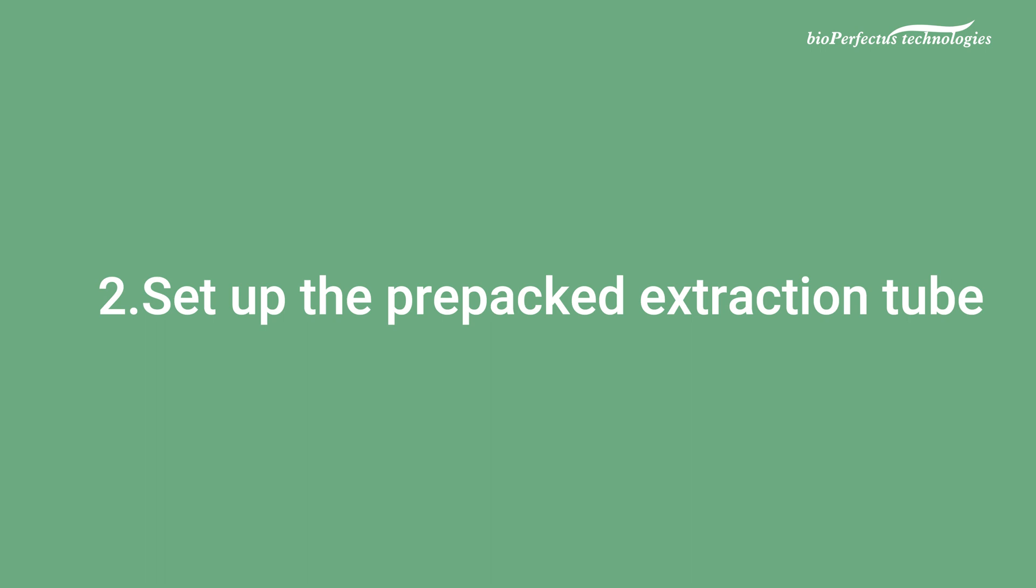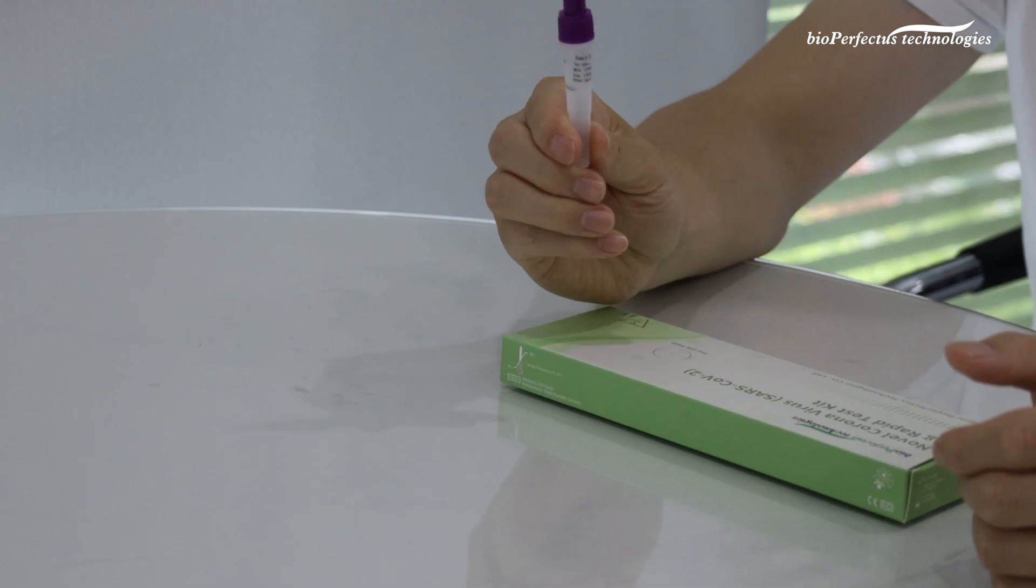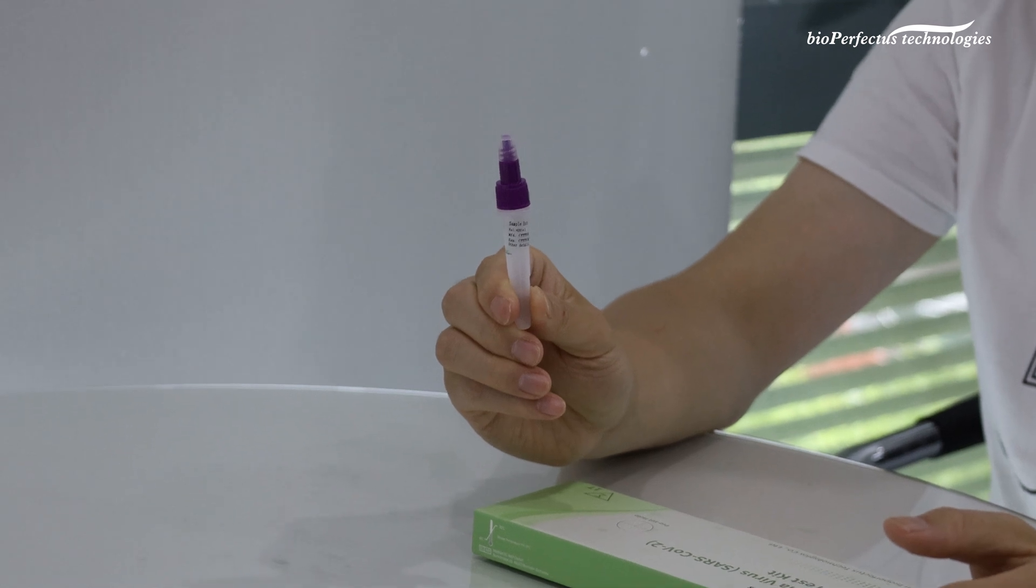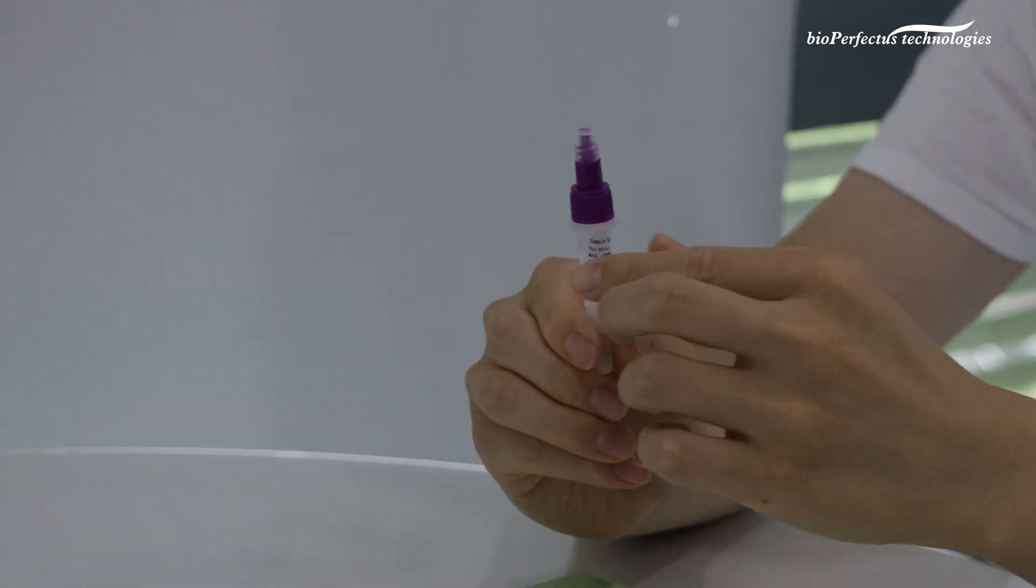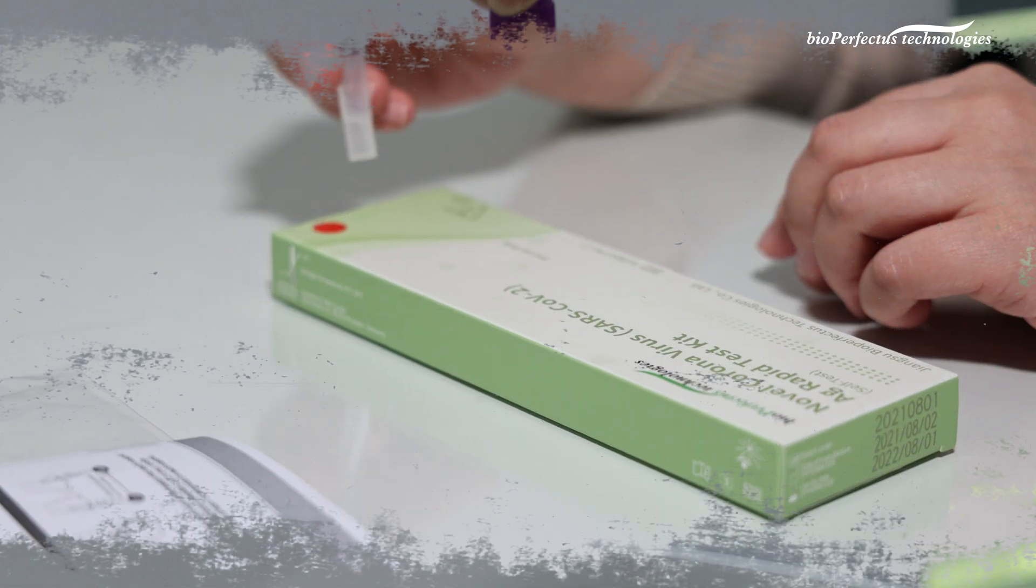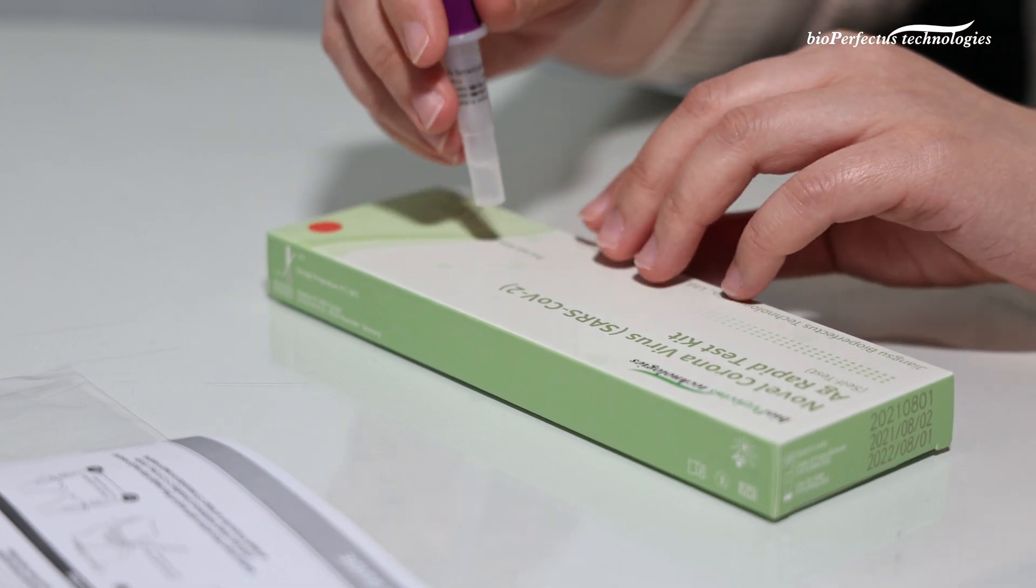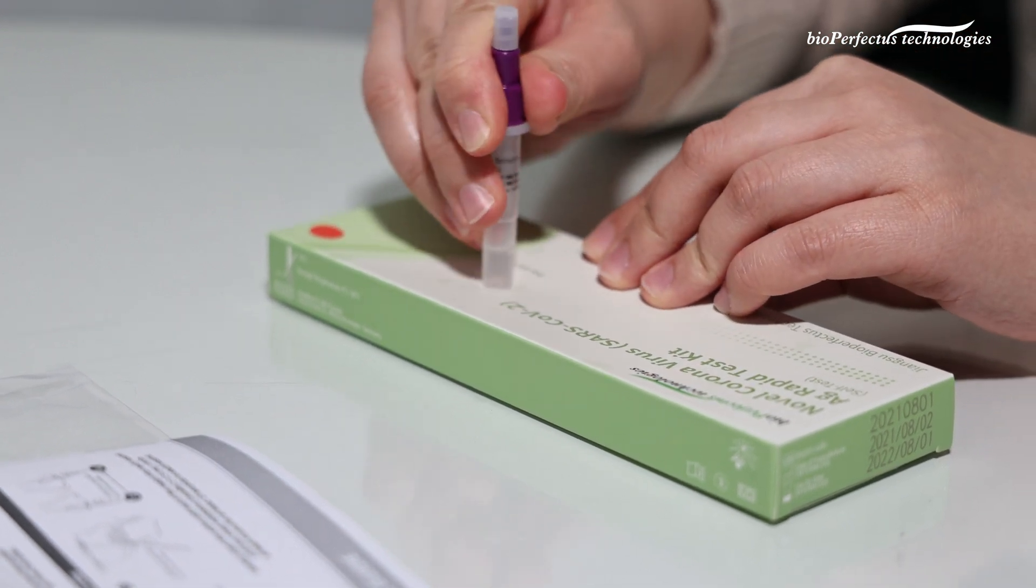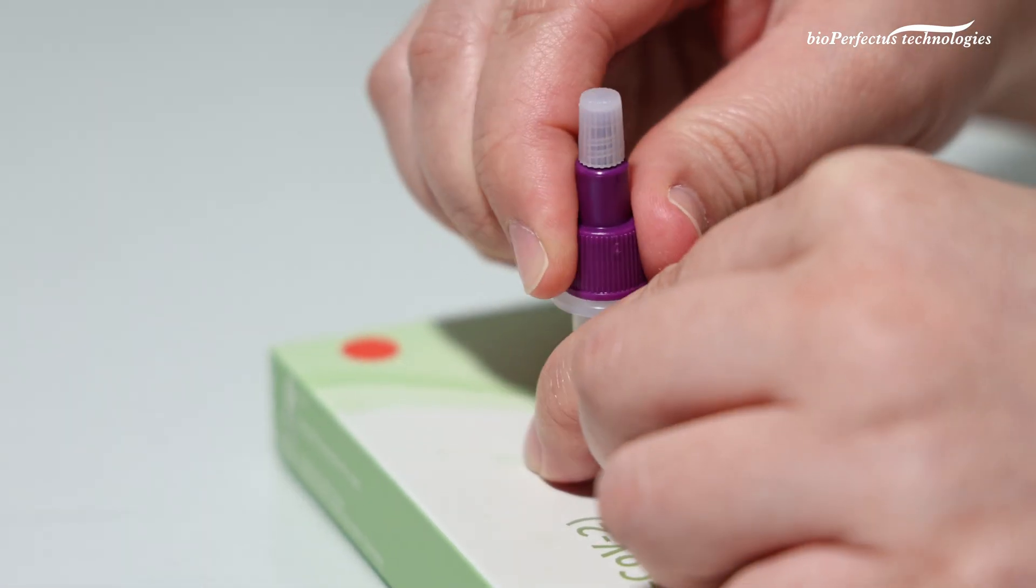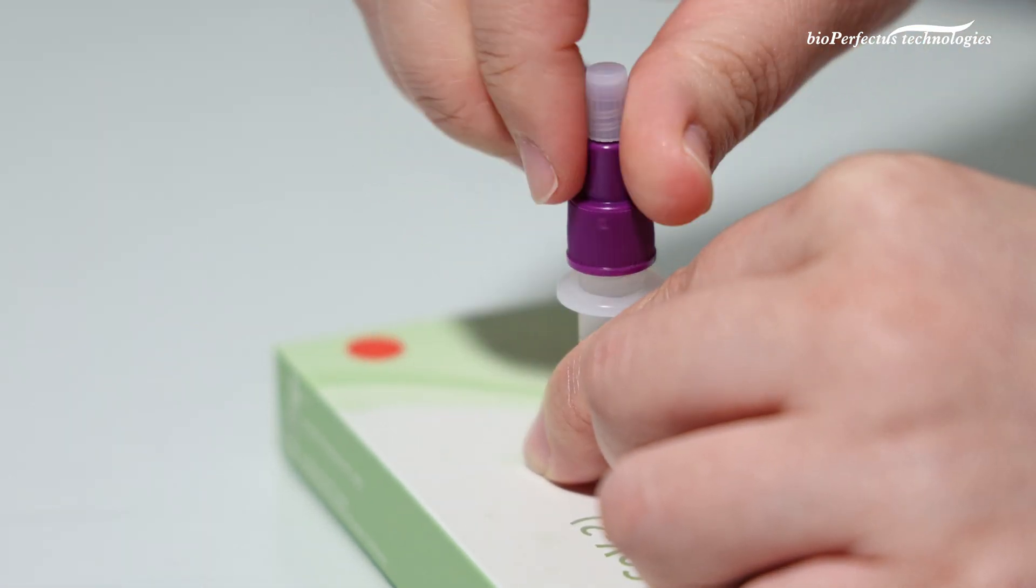Step 2: Set up the pre-packed extraction tube. Take the pre-packed tube out. Keep the pre-packed extraction tube head upwards, and shake the tube two to three times. Place the tube in the preset hole on the package. Unscrew the purple cap from the pre-packed tube.